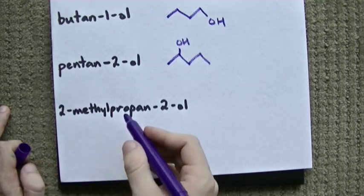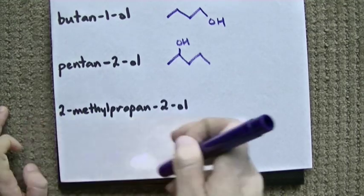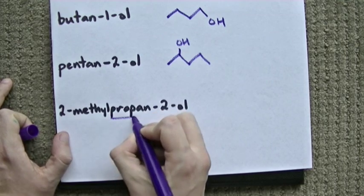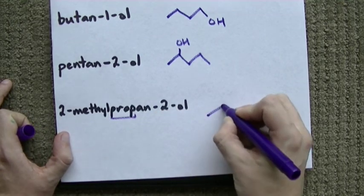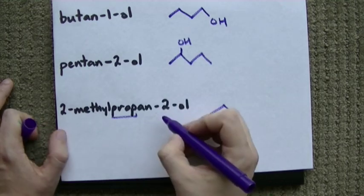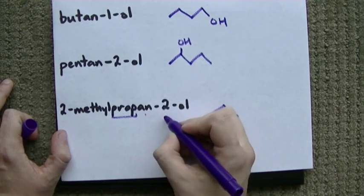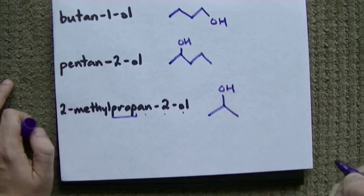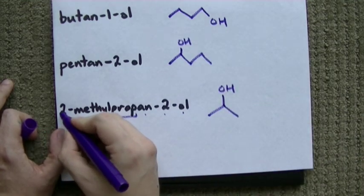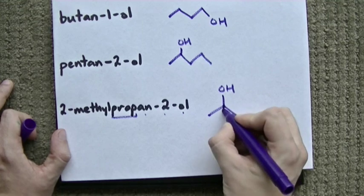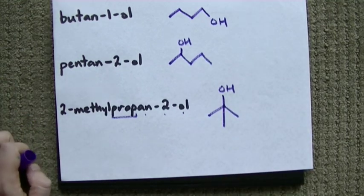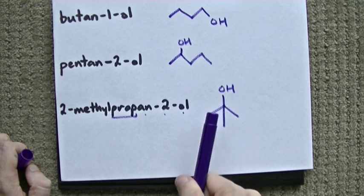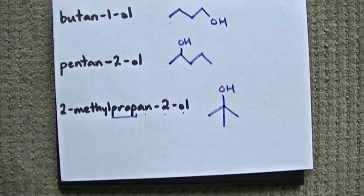And, finally, two-methyl-propan-2-all. Because, you can have substituents. Let's start here. That's our prefix. Three carbon chain. One, two, three. I have... It's all single bonds. And, on the second carbon, I have an OH group. Cool. But, also, on the second carbon, I have a methyl group. An extra CH3. This is 2-methyl-propan-2-all. Pretty sweet.